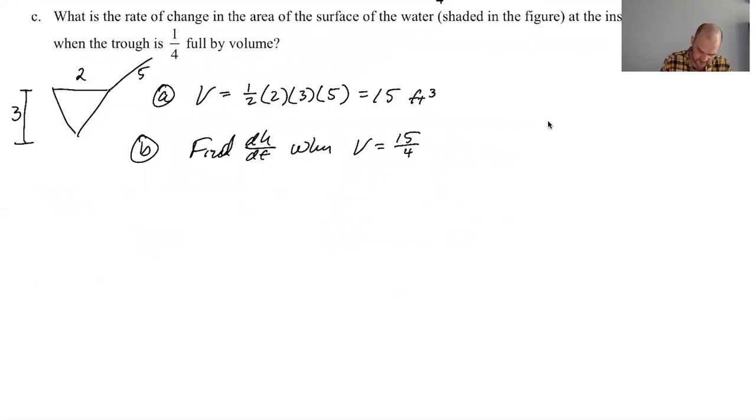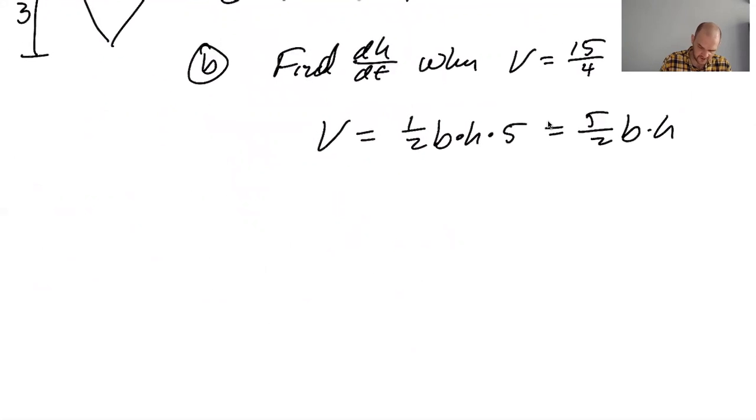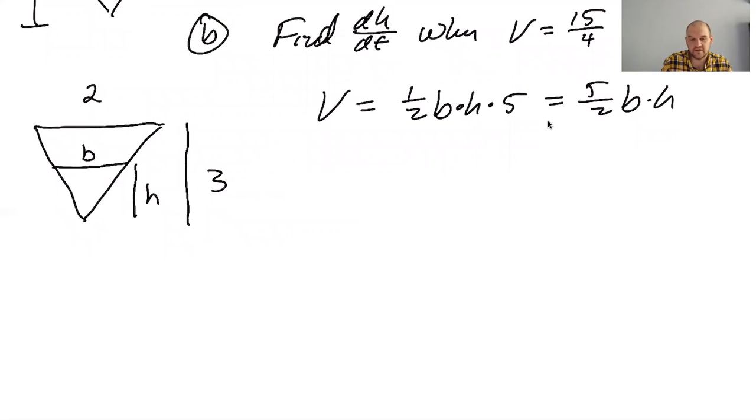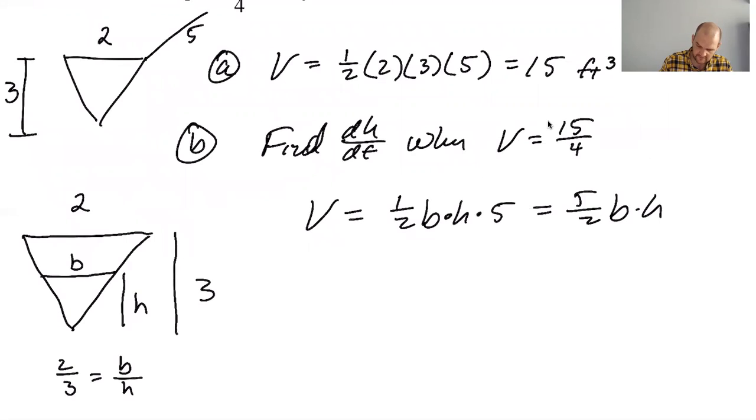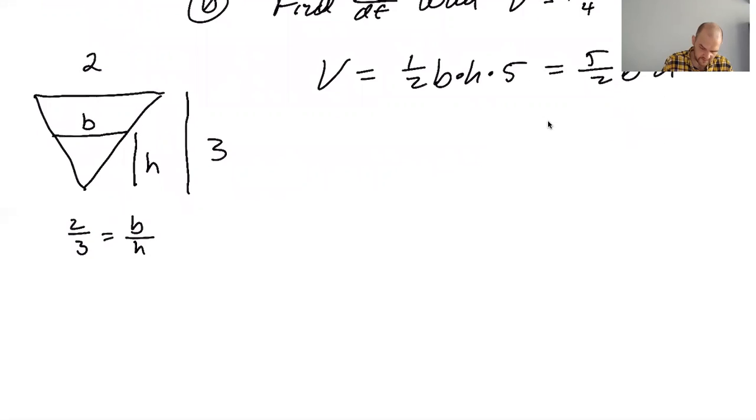So what do I know? I'm gonna have to work. The volume in general is one half base times height times five, right? So five halves base times height. Now let's think about how this trough works. We have h at some time and then b at some time. These are similar triangles, so we know that two over three is the same as b over h. And I want to get rid of b because the question is to find dh/dt. So let's try to eliminate b. So I'm gonna say that b is two thirds of h.